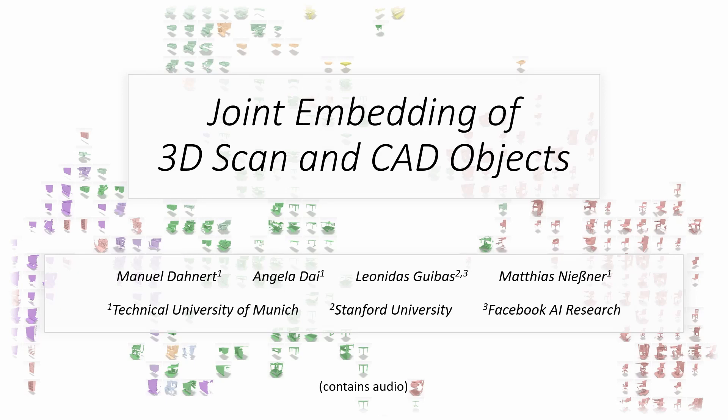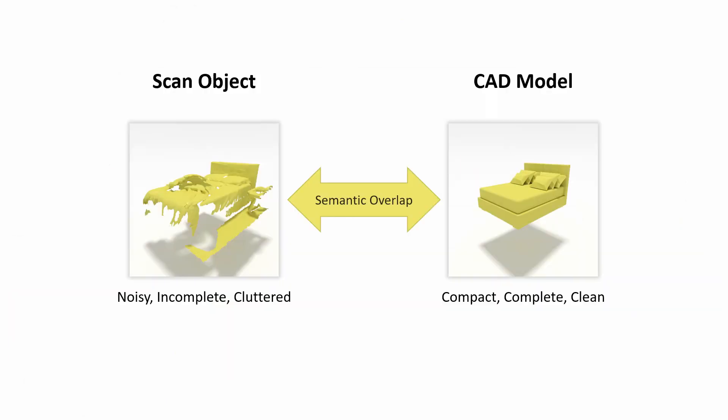We present a method to learn a joint embedding of 3D scan objects and CAD models. Scanned objects and handcrafted CAD models both contain a rich amount of information for shape and scene understanding.